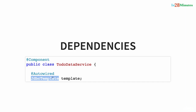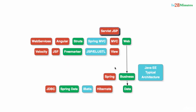So JdbcTemplate is a dependency of TodoDataService. To summarize: in the web layer, TodoController depends on TodoBusinessService; in the business layer, TodoBusinessService depends on TodoDataService; and TodoDataService depends on JdbcTemplate provided by Spring JDBC to talk to the database. A typical application is full of dependency examples. We wanted to give you a few concrete examples so that the concept is clearly in mind as we move on to the next steps. Bye bye!